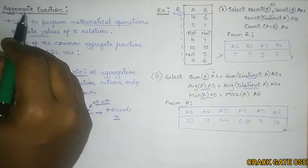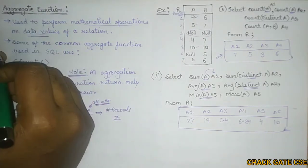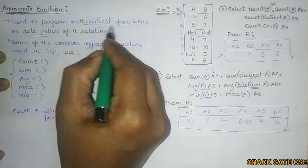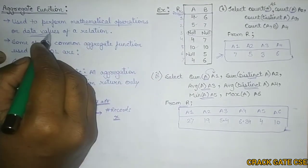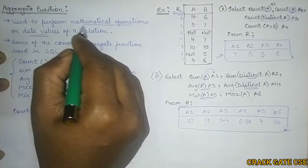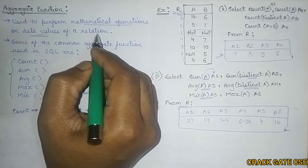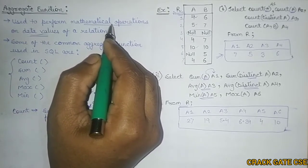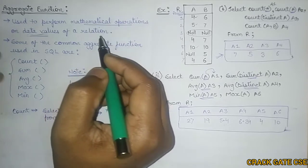First of all, what is an Aggregate Function? What is the role of Aggregate Function? This Aggregate Function is used to perform mathematical operations on data values. We call these data values as numerical values of a relation. That means, if in a table you want to perform any mathematical operation on some numerical values, we can use the Aggregate Functions.